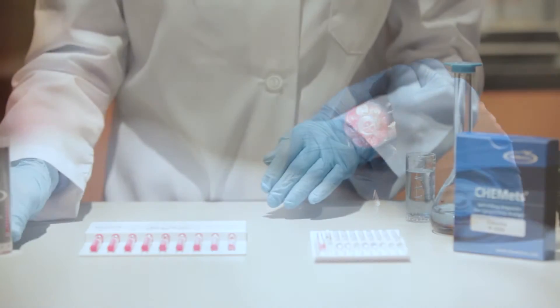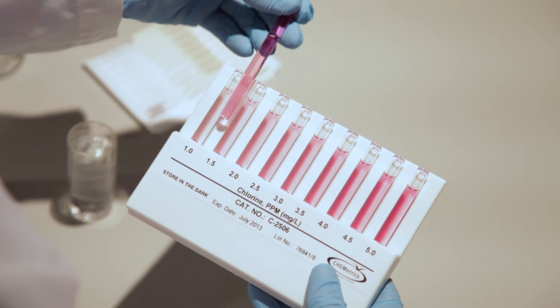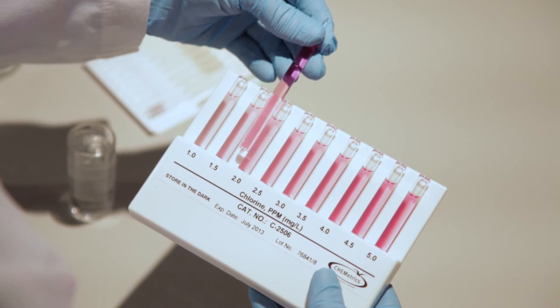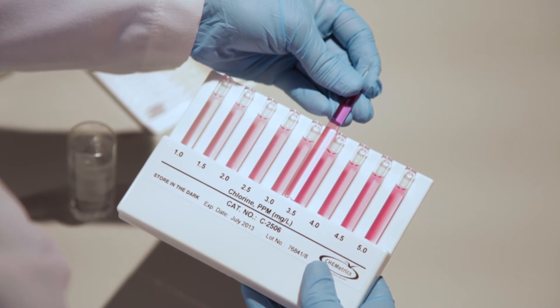For higher concentrations, hold the flat comparator in a nearly horizontal position while standing directly beneath the source of light. Place the ampule between the color standards, moving it along the comparator until the best color match is found.